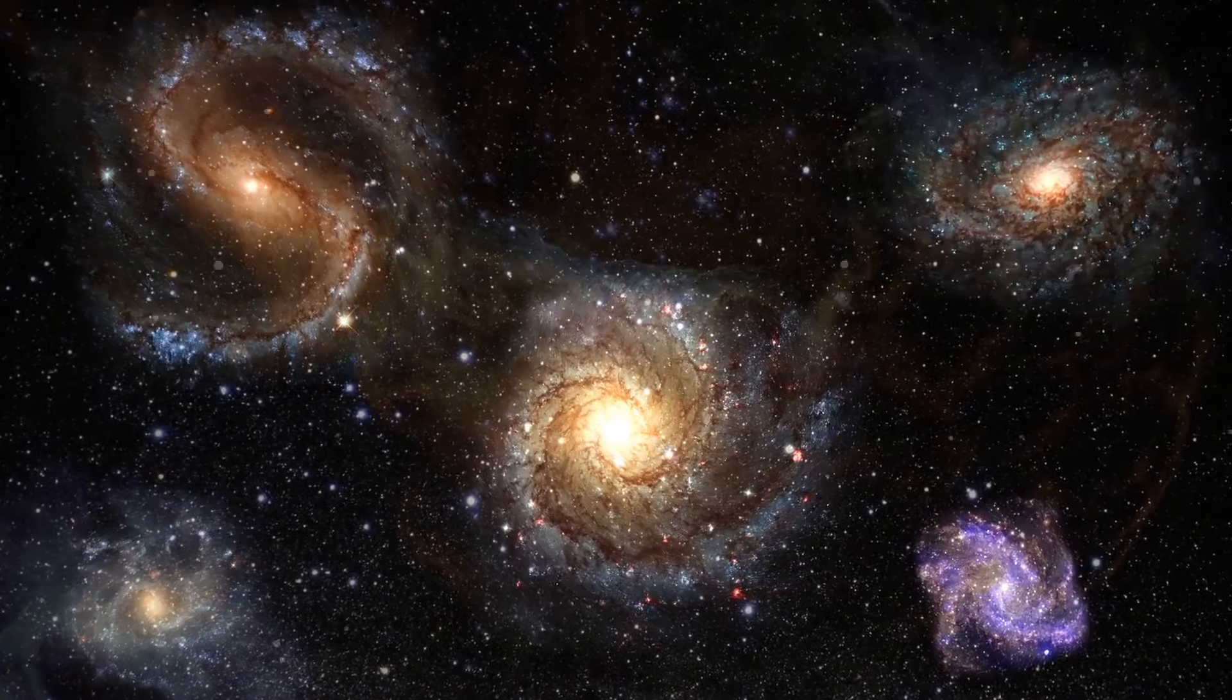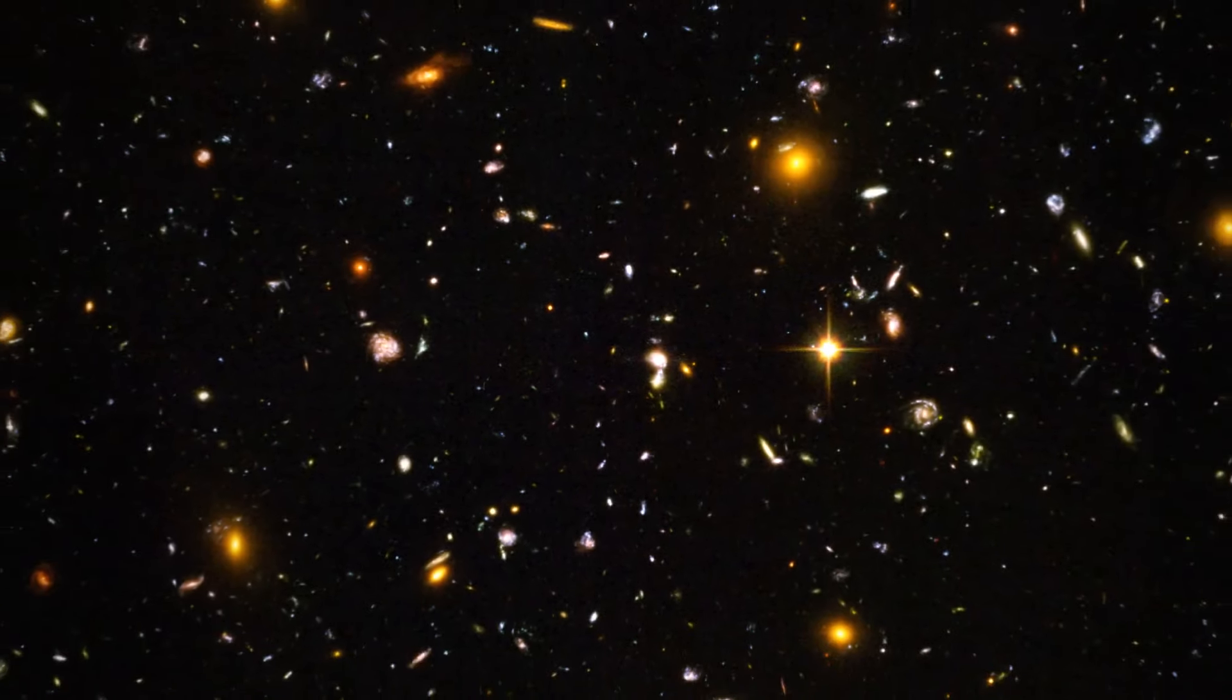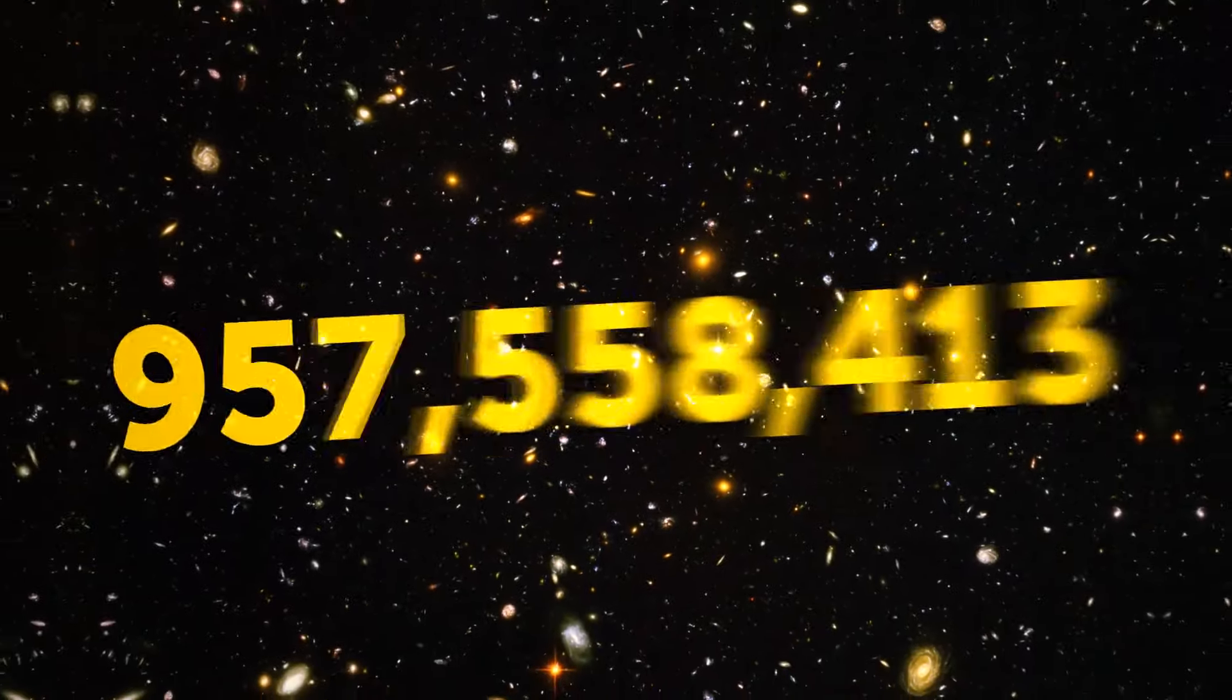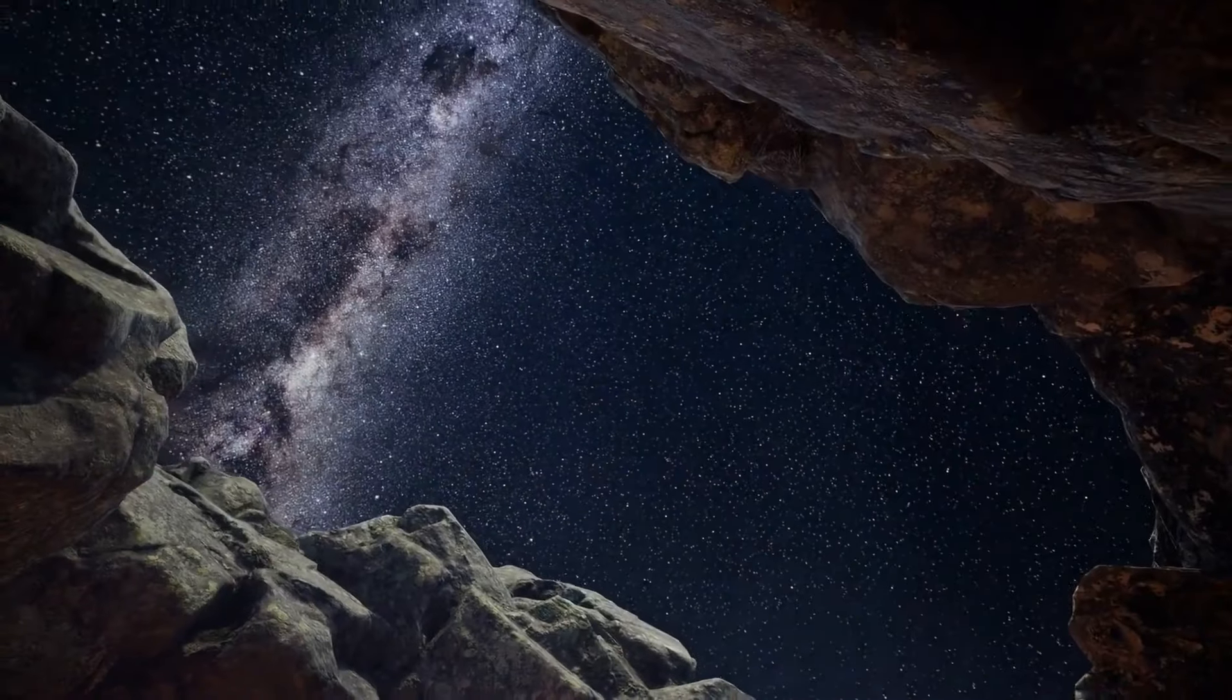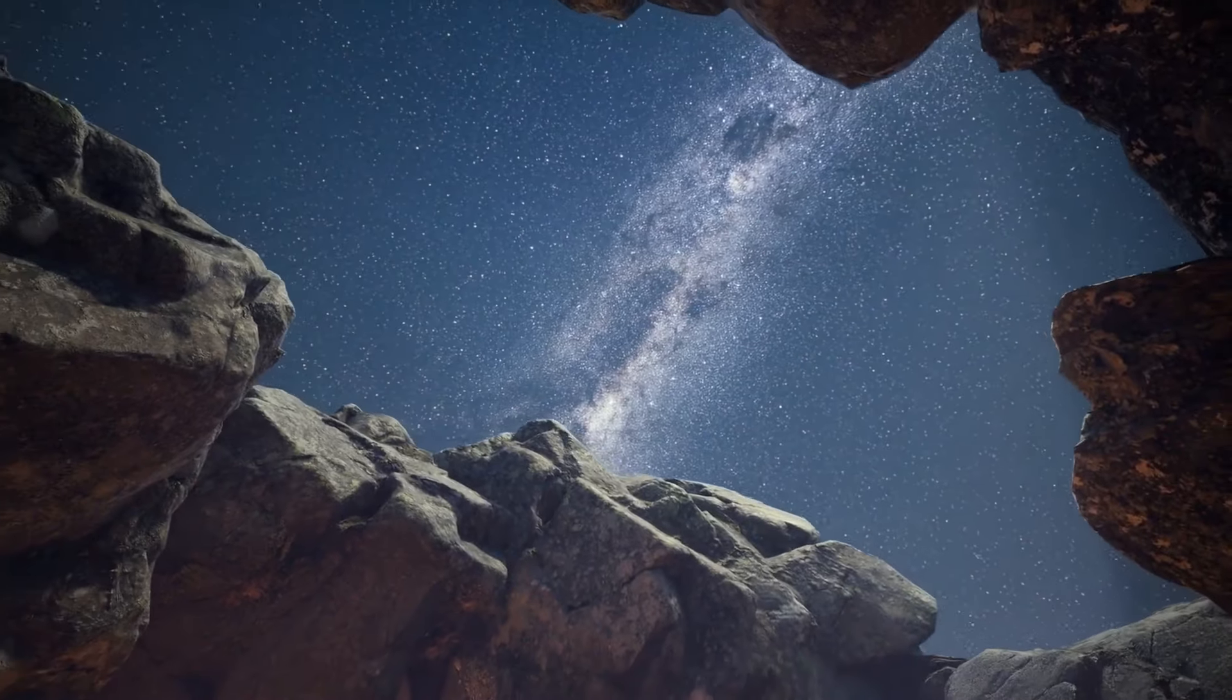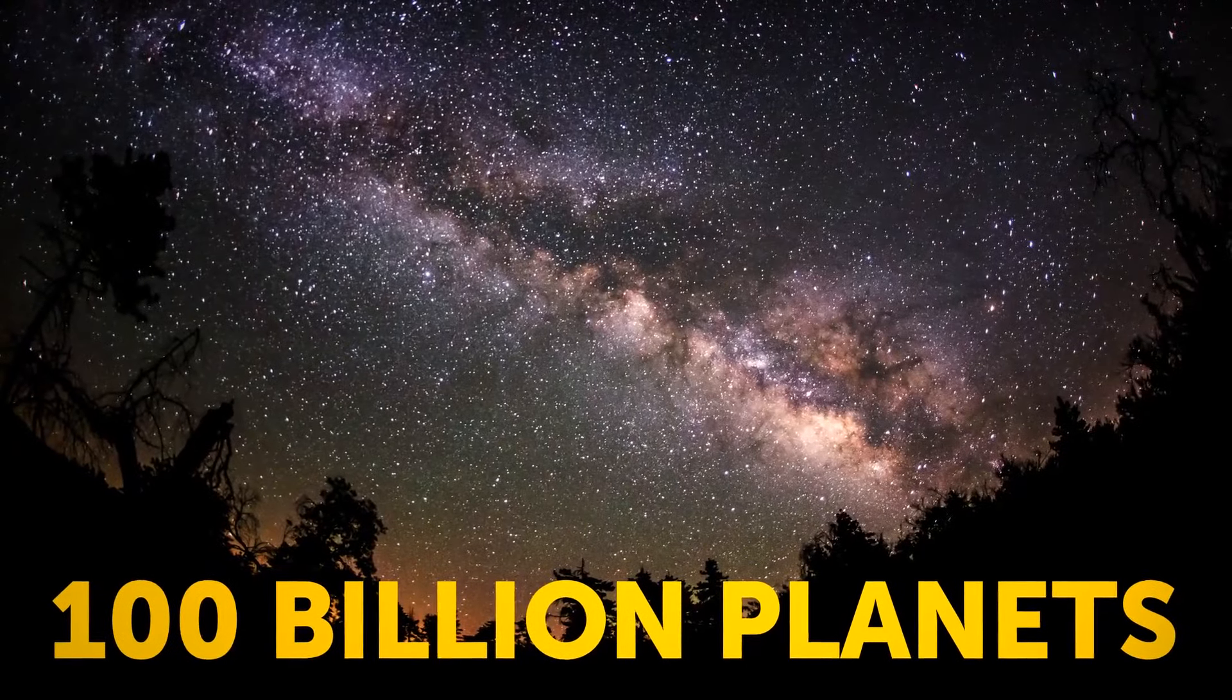Scientists believe that there are at least a couple of billion galaxies out there. We don't know the real number, and probably never will, but they tried to calculate it by counting how many galaxies we can see in a pretty small and restricted area of the sky. It may seem as if the universe was filled with stars and a couple of planets here and there, but our home galaxy has at least 100 billion planets.